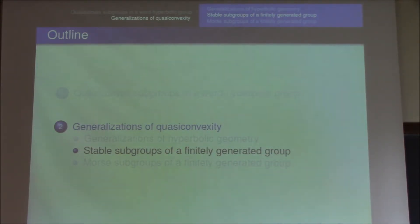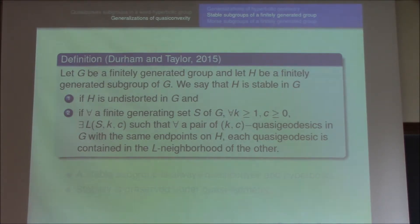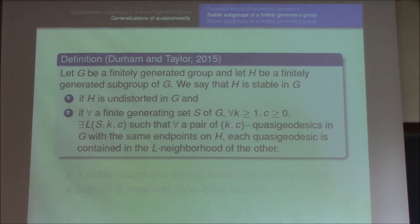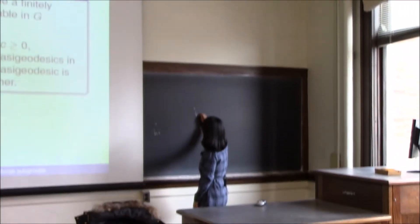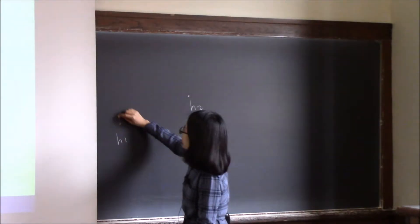Here is the definition of stable subgroups. Let G be a finitely generated group, and let H be a finitely generated subgroup. We say that H is stable if H is undistorted, and for any finite generating set S and K and C, there exists a constant L depending on S, K, C such that for any pair of K,C quasi-geodesics in G with the same endpoints on H, one quasi-geodesic is contained in the L-neighborhood of the other.